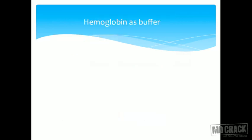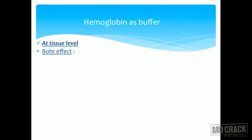Now let us look at hemoglobin as a buffer. Hemoglobin is actually a protein acting as a buffer, and I want to add more since we are talking about the respiratory system — they all are integrated; buffers and the respiratory system are happening together. At the tissue level, there is high carbon dioxide — where the TCA cycle is happening, where muscular exercise is happening — so there is something called the Bohr effect.